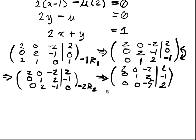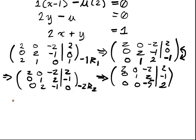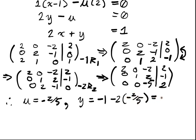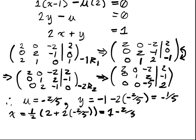And so now, now we can just do back substitution. So back solving, we have that μ is equal to -2/5. Y is equal to -1 - 2 times (-2/5), which will give me -1/5. And x is equal to 1/2 (2 + 2 times -2/5), which is equal to 1 - 2/5, which is equal to 3/5.